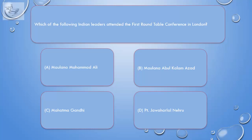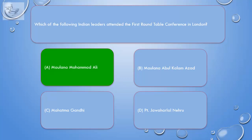Question: Which of the following Indian leaders attended the first Round Table Conference in London? A. Maulana Muhammad Ali, B. Maulana Abul Kalam Azad, C. Mahatma Gandhi, D. Jawaharlal Nehru. Correct answer is A. Maulana Muhammad Ali.